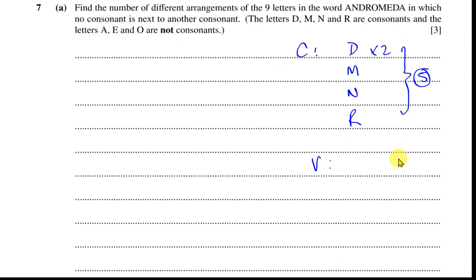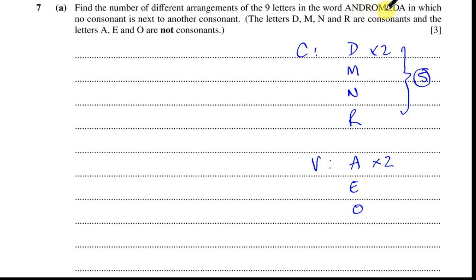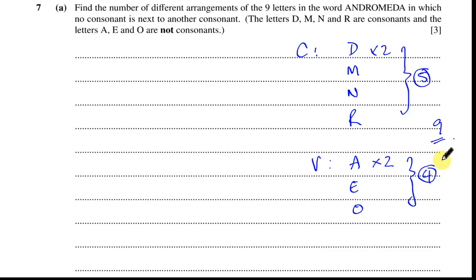The vowels are A, E and O. In the word Andromeda, A appears twice — it's repeated. O and E appear just once each. So altogether there are 4 vowels. In total there are 9 letters, as expected. So we can now proceed and try to deal with this question.